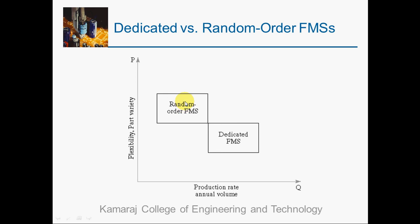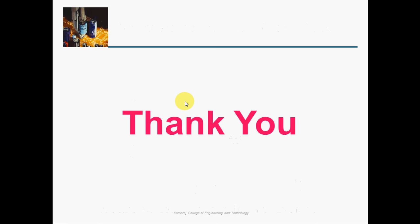To summarize: we analyzed the situations in which FMS can be implemented, defined what a flexible manufacturing system is, studied the various types of flexibility tests to check whether a system is flexible, and concentrated on the types of FMS. Thank you.